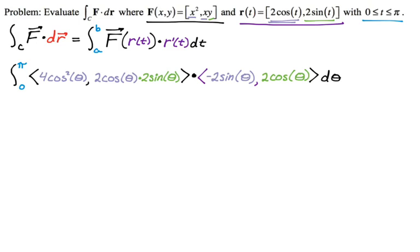And this is a really disappointing line integral, or at least I always find it disappointing when this happens, because it's a lot of work to get to this point. So it's zero to pi. And then when we dot product, we multiply this and this, and we get negative eight cosine squared theta, sine theta.